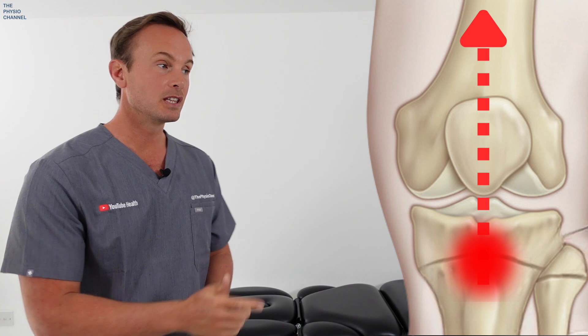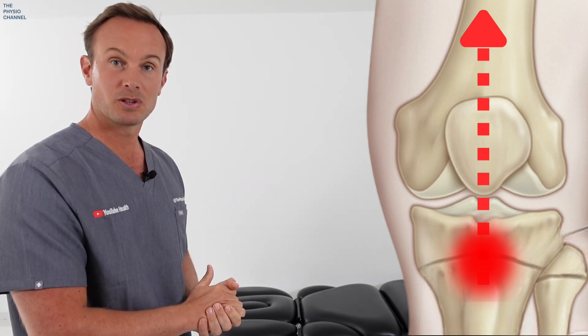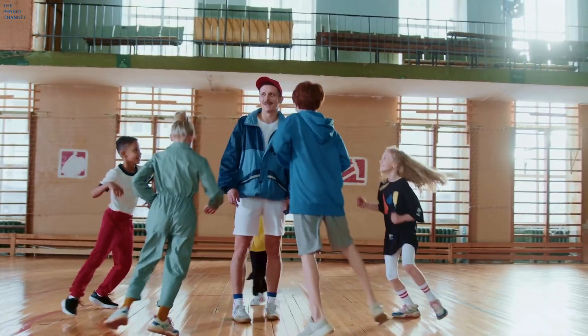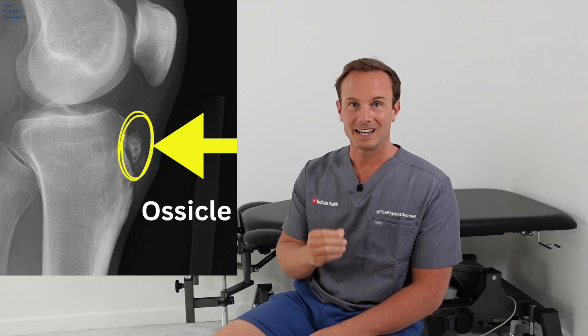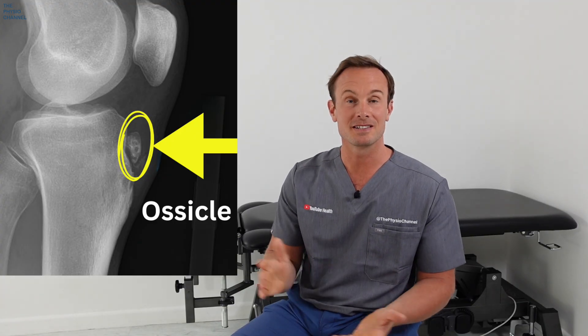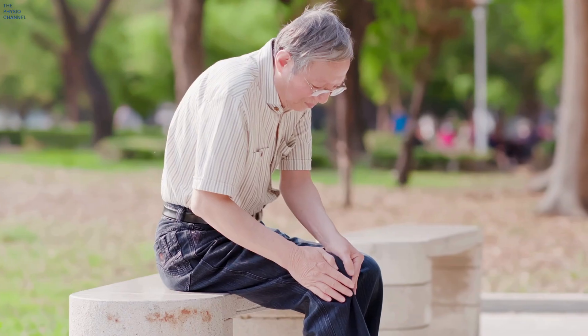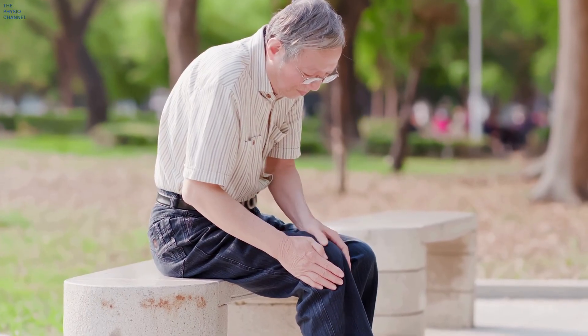When we're young and still growing, the pull from the patellar tendon can strain and inflame the growth plate, and this is more common in sporty individuals. In rare cases, this excessive traction can lead to the development of a small piece of bone in the lower part of the tendon, and this is called an ossicle. This bony lump can irritate the tendon and the surrounding bursa, and this is the most likely cause of pain in adults who had Osgood Schlatter's in their youth.